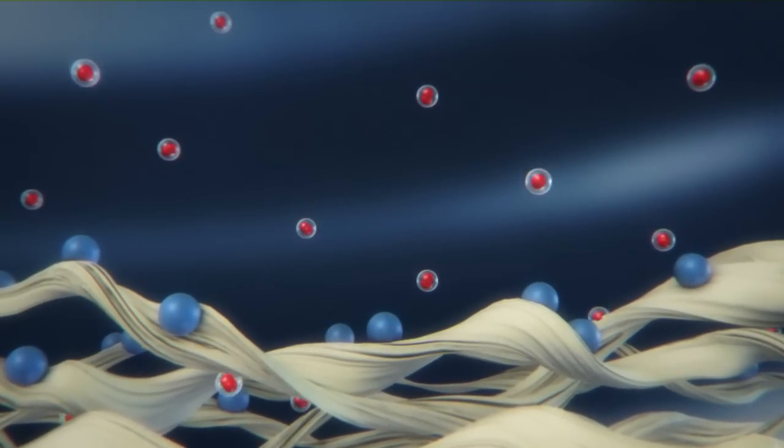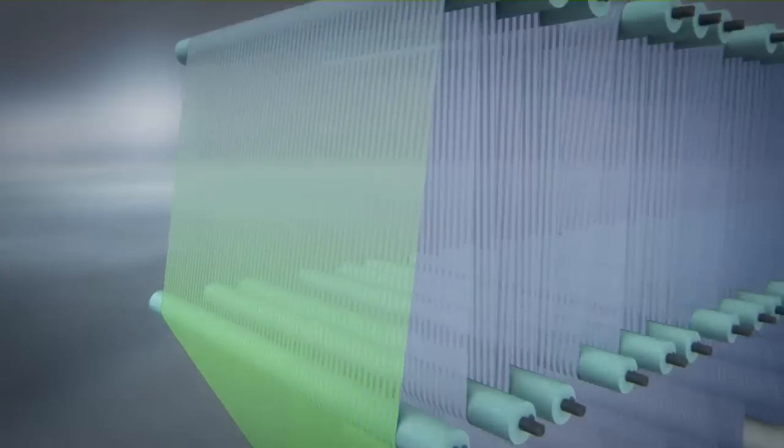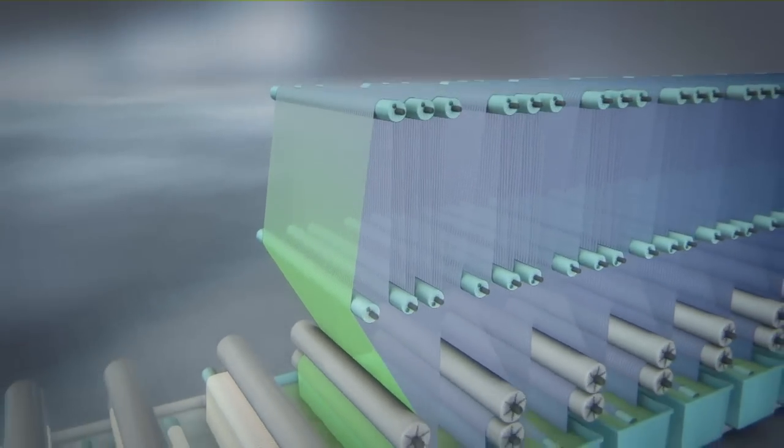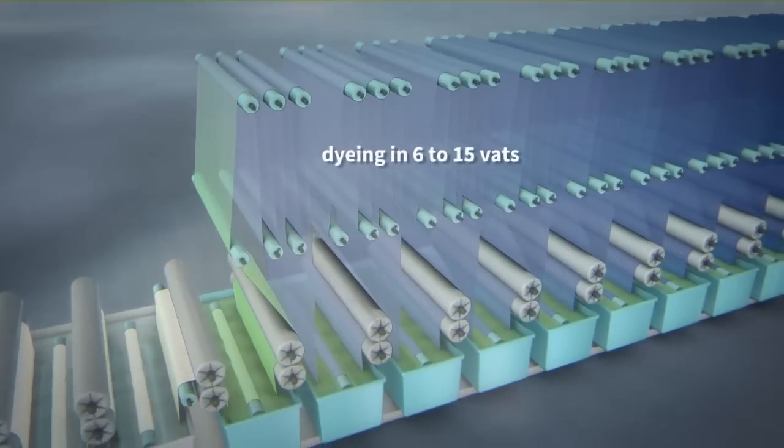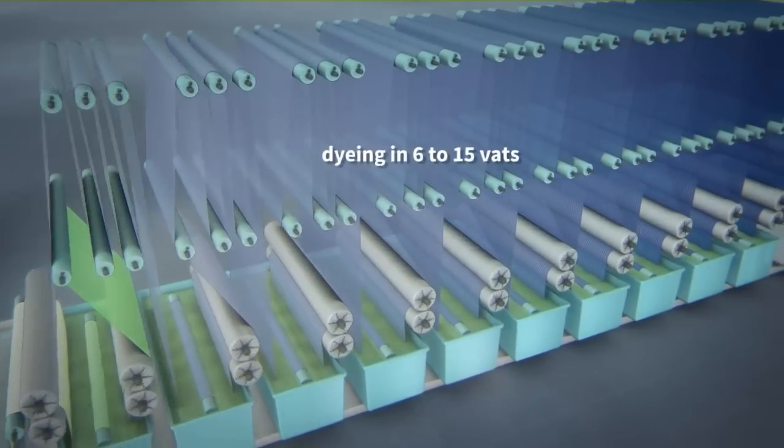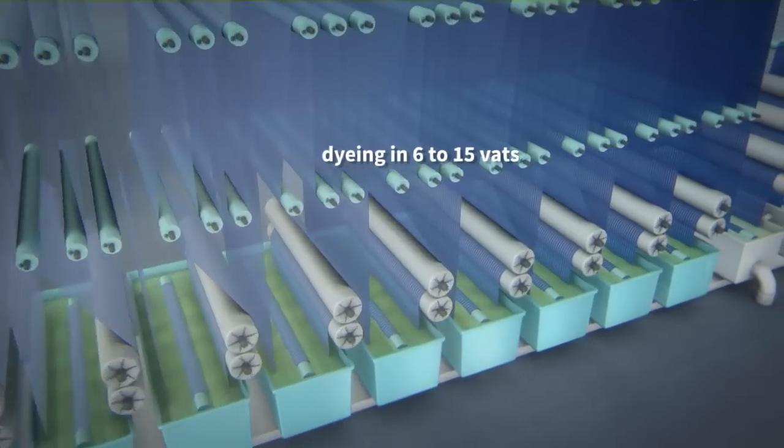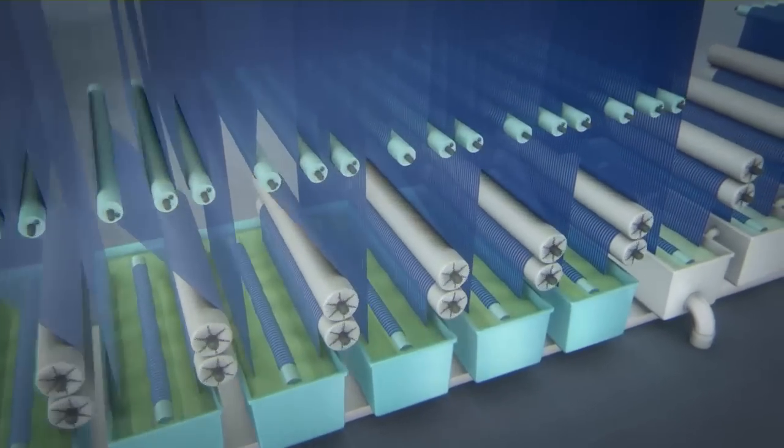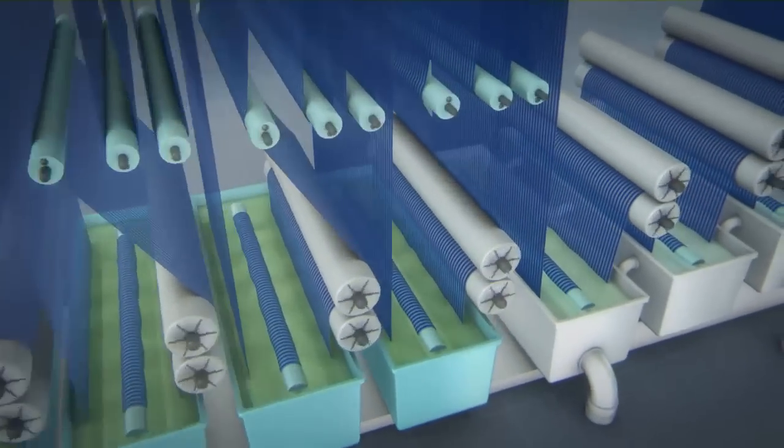The dye is no longer water soluble and adheres to the fiber. For intensive and uniform dyeing, the cotton has to pass through six to fifteen consecutive dyeing vats because the fiber absorbs the indigo only very slowly.